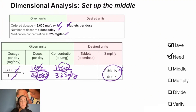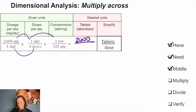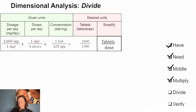Now that we've set up our middle, we can multiply across. On the top: 2,600 times 1 times 1 gives us 2,600. On the bottom: 1 times 4 times 325 gives us 1,300. So we have 2,600 divided by 1,300, which gives us 2 tabs per dose.